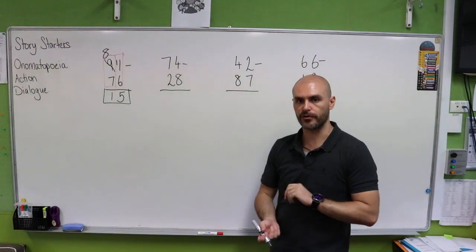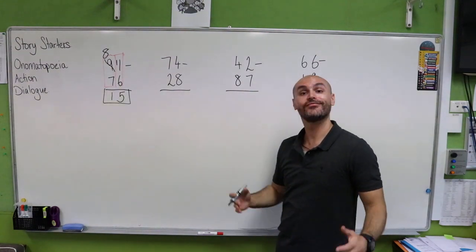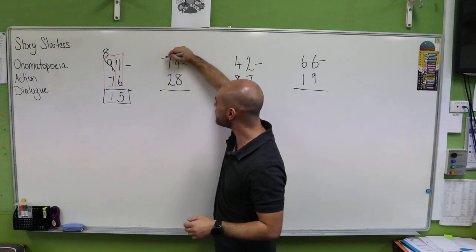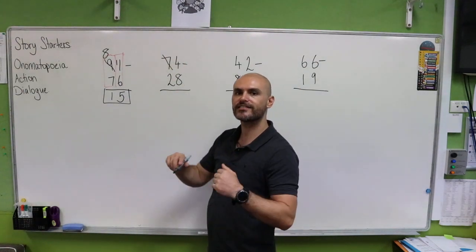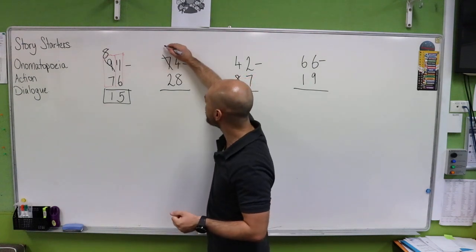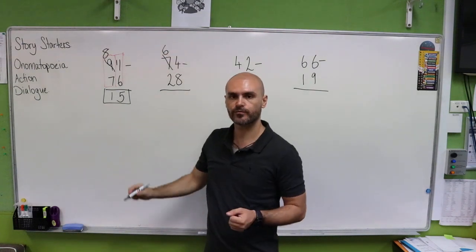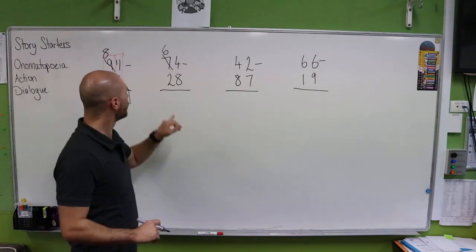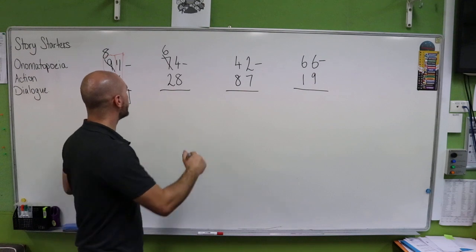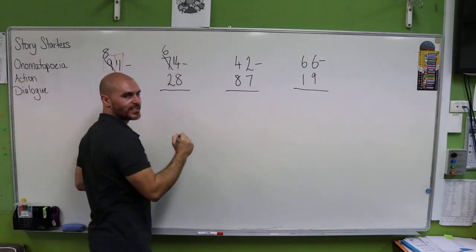Which column are we going to borrow from? Exactly. We're borrowing from our tens. So we're going to cross out our seven and our seven loses one, which makes that six. Now four then gets 10 from the 70 and our four becomes 14.